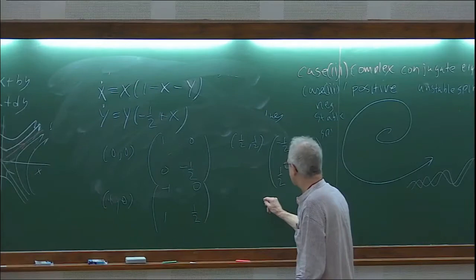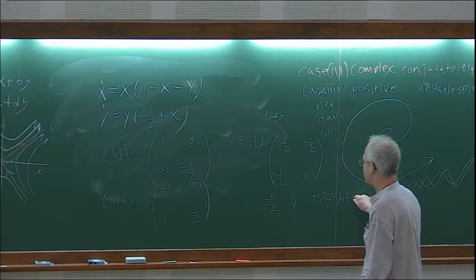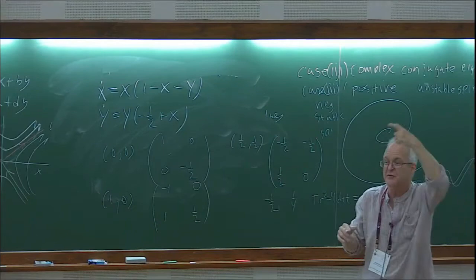For the equilibrium at (1/2, 1/2): trace is minus 1/2, determinant is 1/4. Trace squared minus four times the determinant is less than zero — it's inside the parabola — so the eigenvalues are complex with negative real part. That means it's a stable spiral.